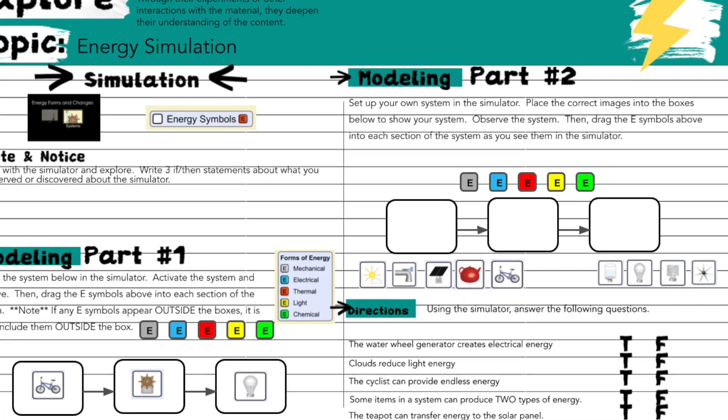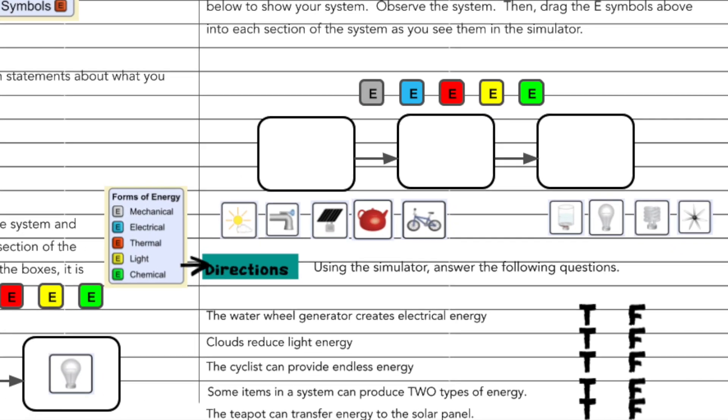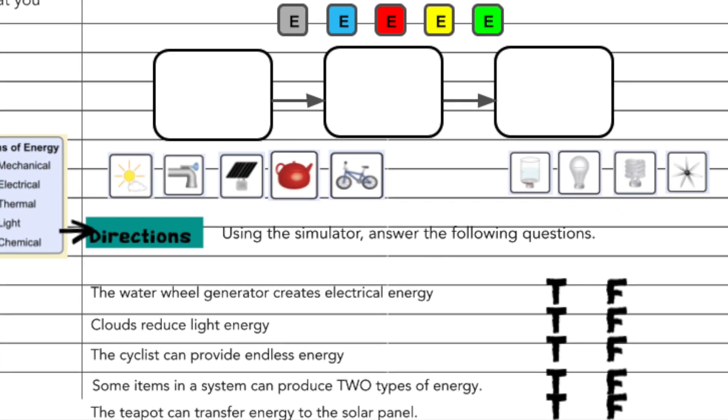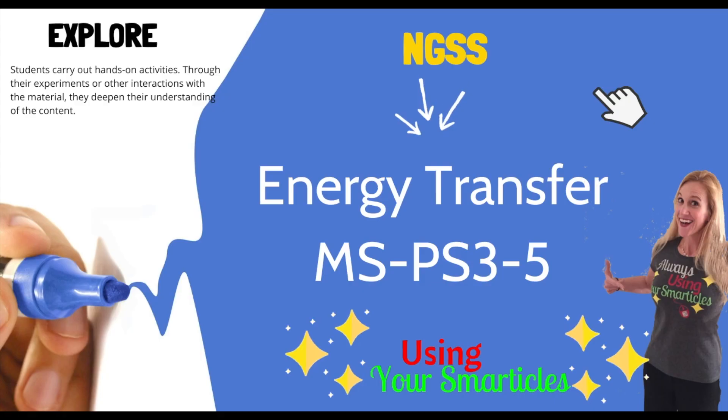The final section of the notebook that we're going to take a look at is the true and false section. You may need to use the simulator to help you answer the questions. Read each statement and then determine whether or not it is a true statement or a false statement. If you determine it to be true, then just delete the F for false. If you determine the statement to be false, then delete the T for true. Do this for each statement on the page. When you're finished, hopefully you'll have a better understanding about how energy transfers throughout a system.